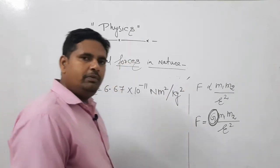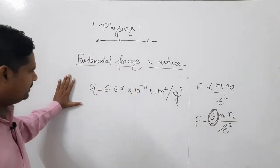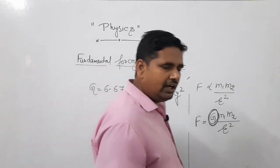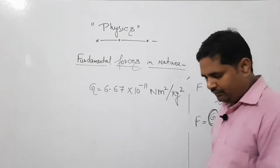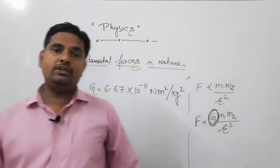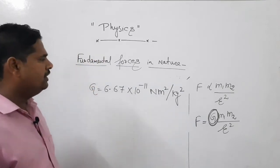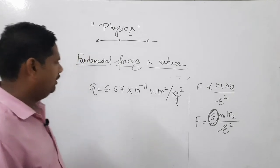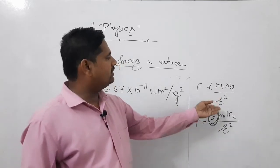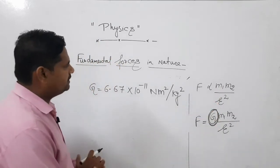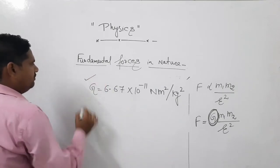So this was gravitational force. Definition is very simple. Definition is different, law is different. According to definition, force of attraction between any two bodies is called gravitational force, and reason of this force is masses of both objects. And law says force is directly proportional to the masses of both objects and inversely proportional to the square of distance between both objects.